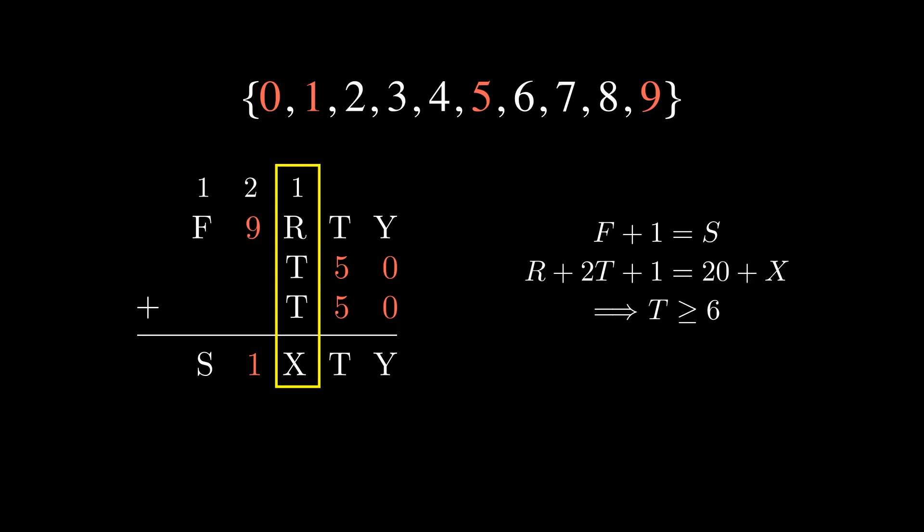But remember, we already used 0 and 1 in the previous steps. This means that the smallest value we can assign X is 2, so our right-hand side must be at least 22. Setting T equal to 6 no longer works, which narrows the choices for T down to 7 or 8. Let's explore each of these possibilities. While doing so, we can mark the digits we attempt to assign as blue to mean unconfirmed.